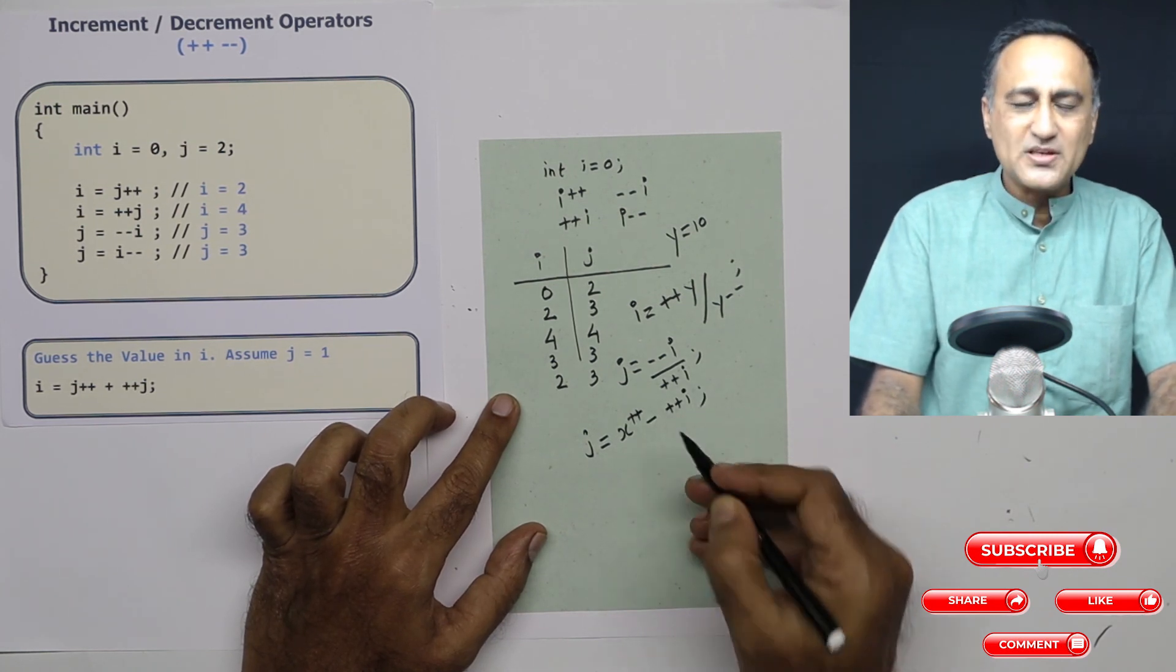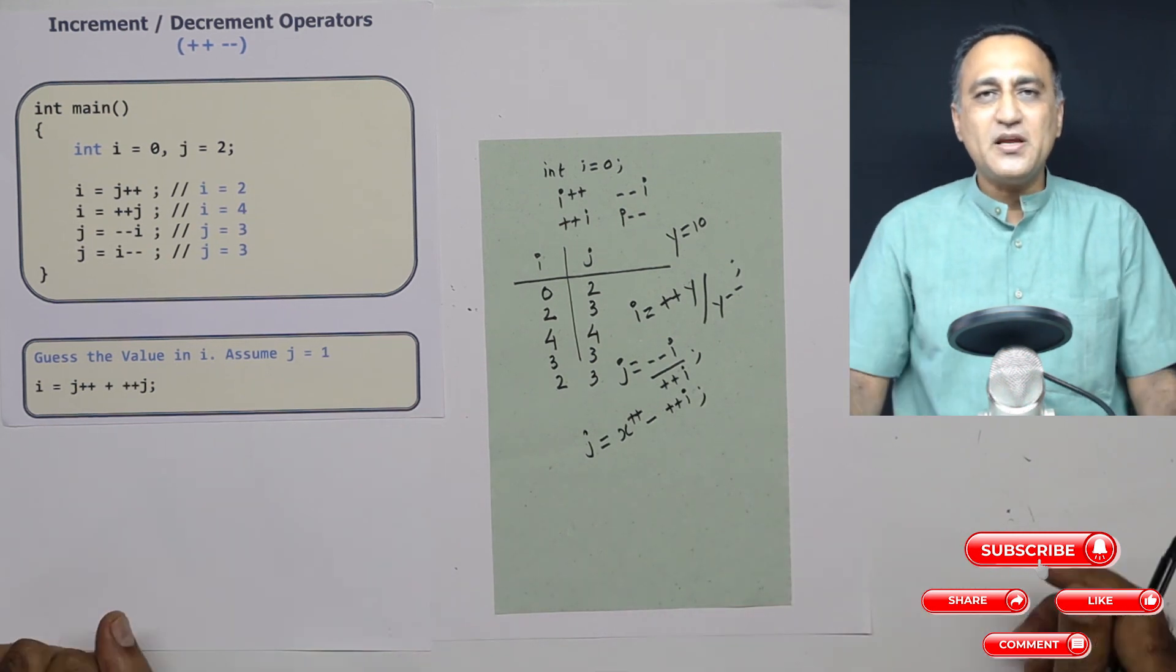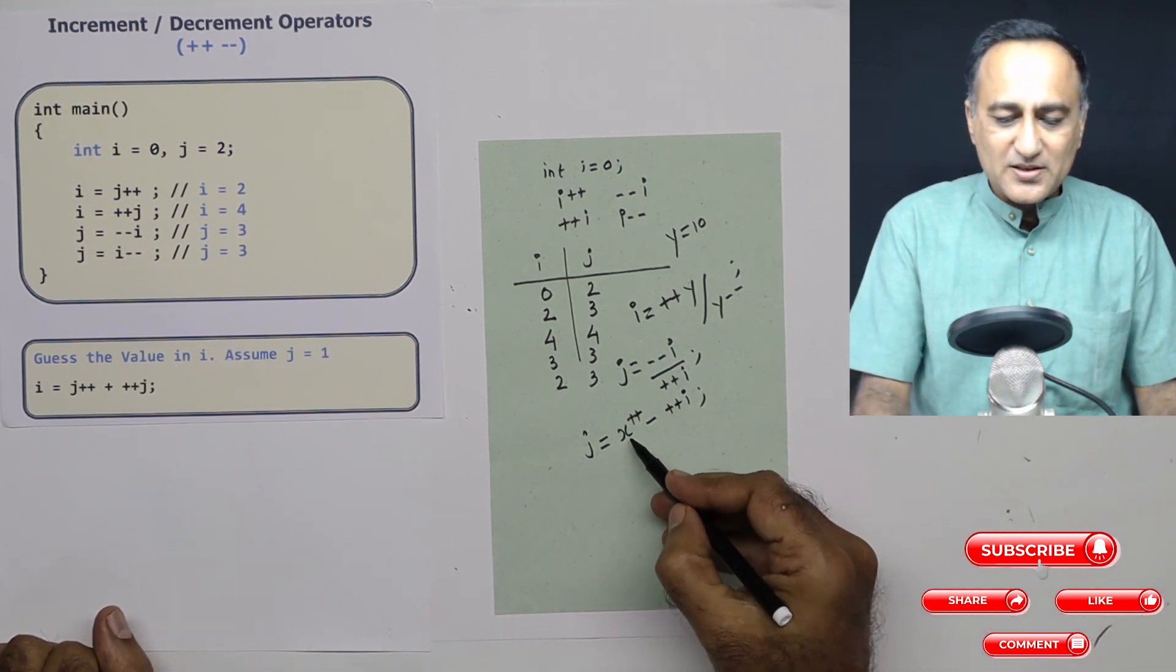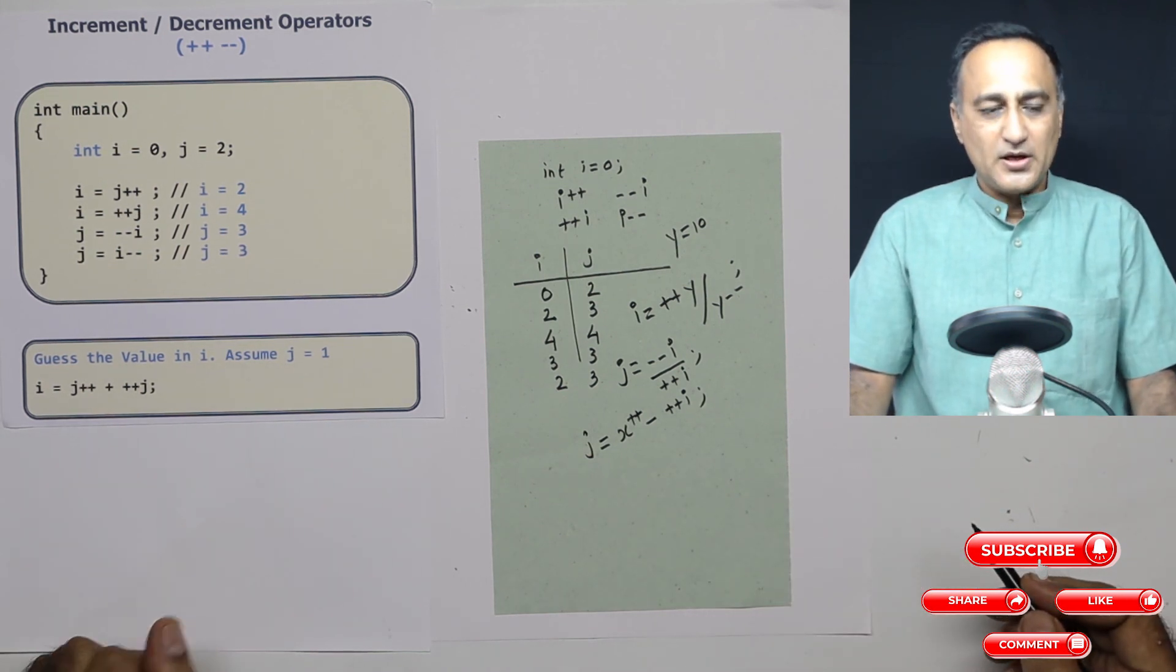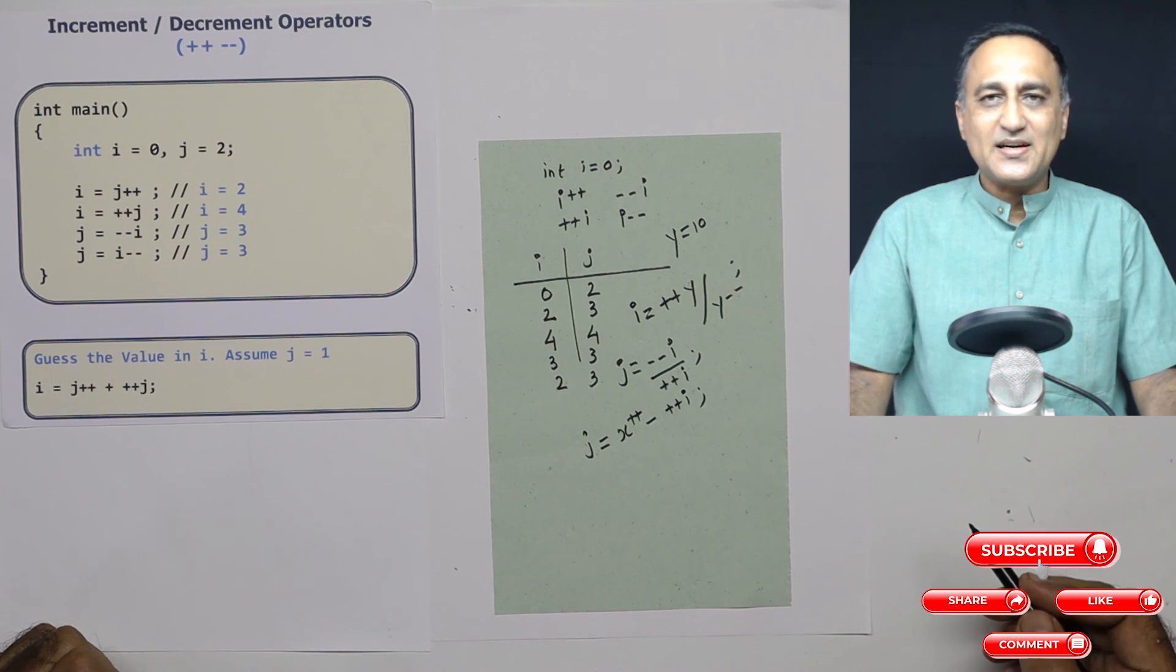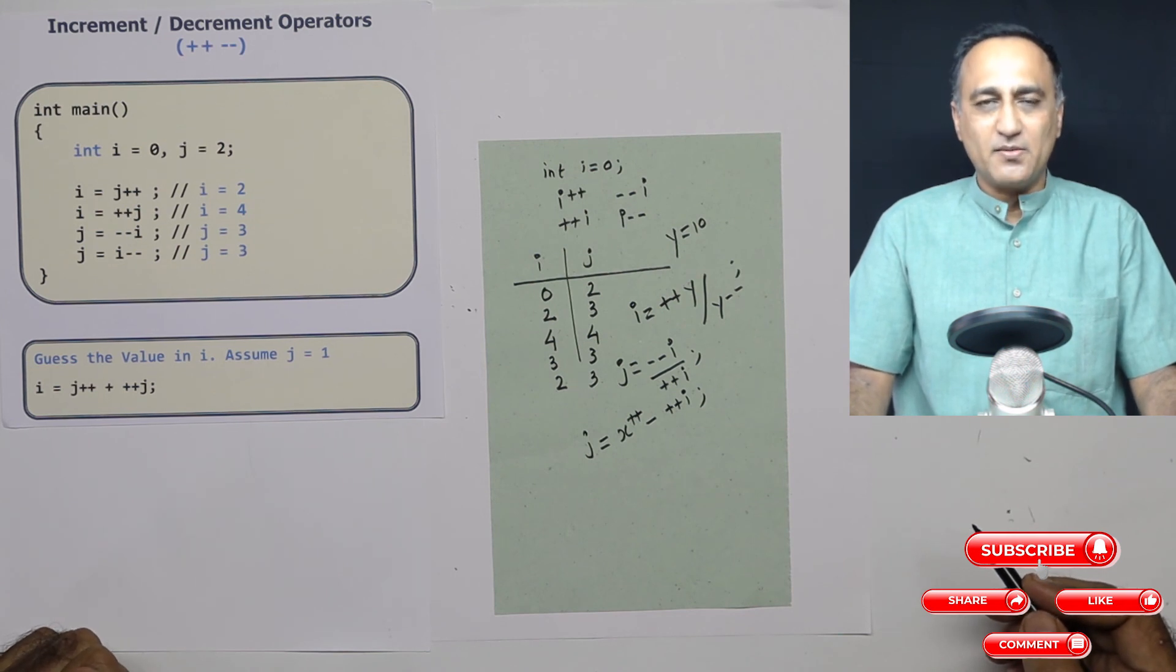This is not a problem because x and i are two different memory locations. But if I replace x with i, then you'll have the same problem. This should give you a decent understanding of the increment and decrement operators and how to use them judiciously in your code.